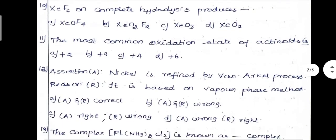Next, you have made mistakes. The most common oxidation state of actinides — the common answer given is plus 4, but the correct answer is plus 3.